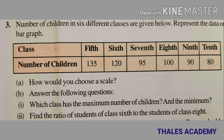In Exercise 3.3, question three: the number of children in six different classes are given below. Represent the data on a bar graph. In Class 5 there are 135 students, Class 6 has 120 students, Class 7 has 95 students, Class 8 has 100 students, Class 9 has 90 students, and Class 10 has 80 students.